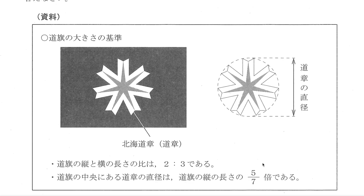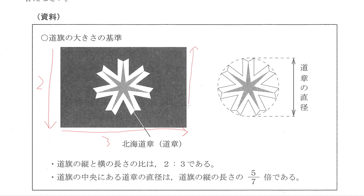問4: 北海道の旗（同記）の大きさの基準についてです。同記の縦と横の長さの比率は2対3。同記の中央にある紋章（同省）の直径は、同記の縦の長さの7分の5倍である. We have a flag of 北海道 with a symbol in the center, the flag has a ratio of 2 to 3, and the diameter of the symbol is 5/7ths of the vertical length of the flag.